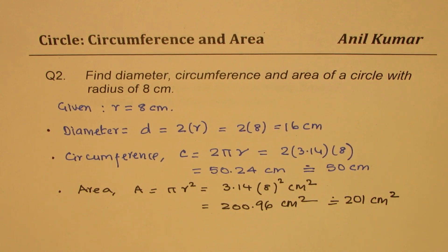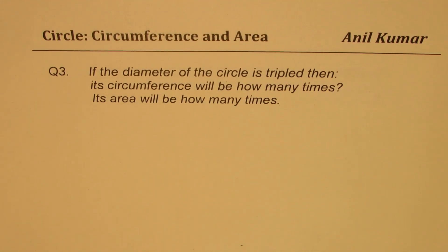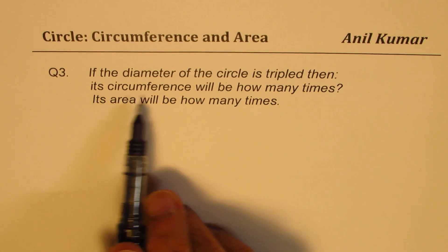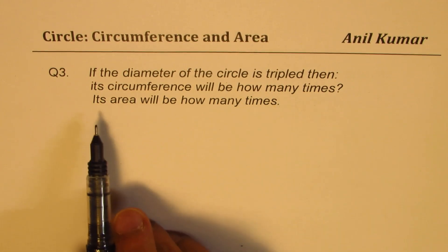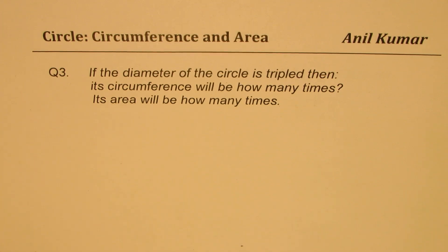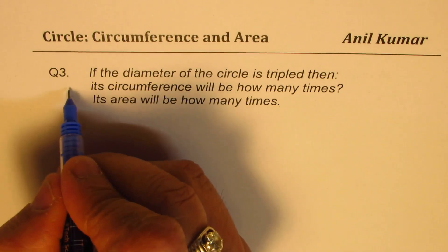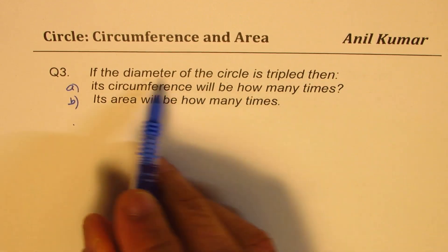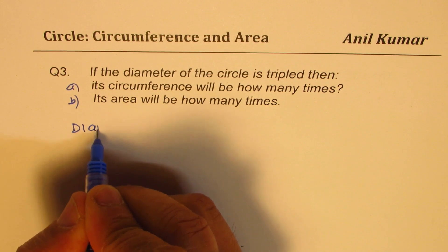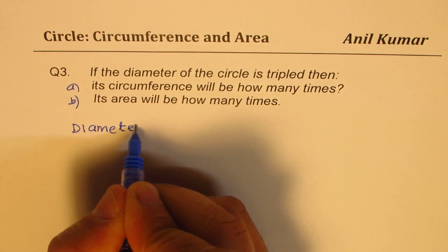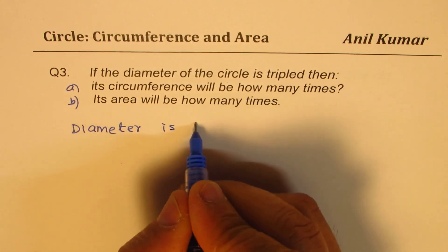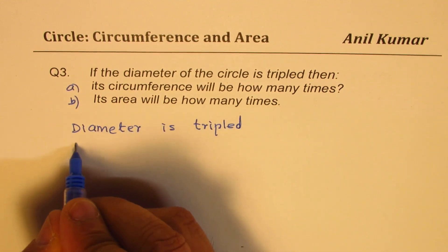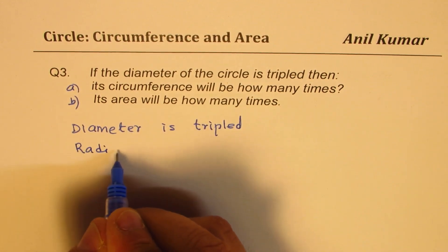Now, let's move on to question number three: if the diameter of a circle is tripled, then its circumference will be how many times? Its area will be how many times? Here we have two parts. When diameter is tripled, radius will also be 3 times.